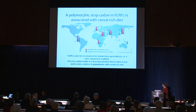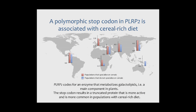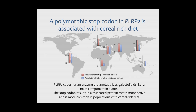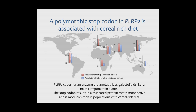Another example involving a dietary component was observed at the PLRP2 gene, which codes for an enzyme that metabolizes galactolipids — a main component of plants. Interestingly, we found a polymorphic stop codon resulting in a shorter protein that occurs at higher frequency in populations specializing in cereals compared to those that do not, shown here with red indicating cereal-specialist populations versus blue. We predict based on biochemical evidence that this truncated protein is actually more active, making it very sensible that it's found at higher frequency in populations with a plant-based, cereal-rich diet.